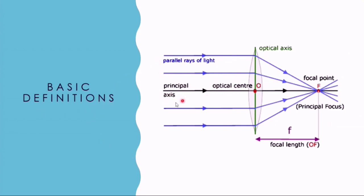Parallel rays of light, after passing through the convex lens, converge at a point. This point is known as the focal point or principal focus. It is a point on the principal axis where rays of light parallel to the principal axis converge.